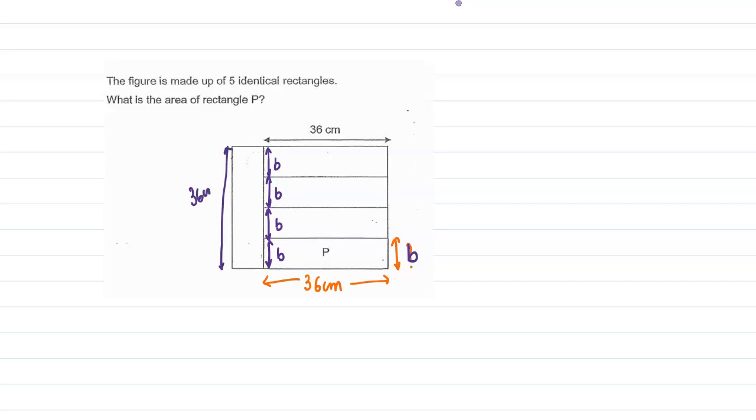So B should be equal to 36 divided by 4, so B is equal to 9. Now we get the other side B as 9. So what would be the area of rectangle P?